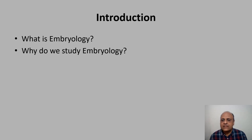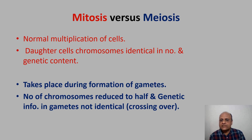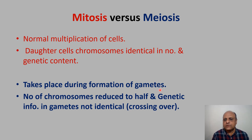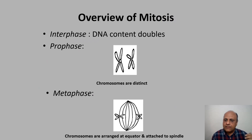Up to two months of life, the developing individual is called an embryo, and from two months to delivery we call it a fetus. Moving forwards — mitosis and meiosis. Mitosis is the normal multiplication of cells; daughter cells have identical number of chromosomes and genetic content. Meiosis takes place during formation of gametes — spermatozoa and ova — where the number of chromosomes is reduced to half, and genetic information is not identical due to crossing over.